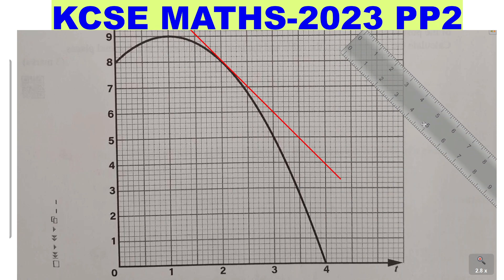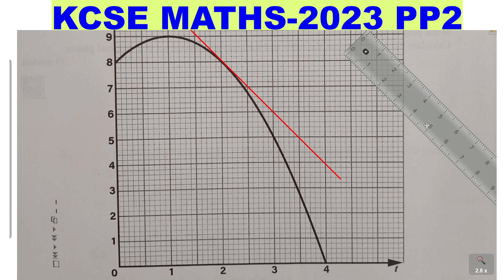So after doing that, to get the rate of change at t equals 2, we get the gradient of that line. So how do we get the gradient of that line? By simply picking any two points.